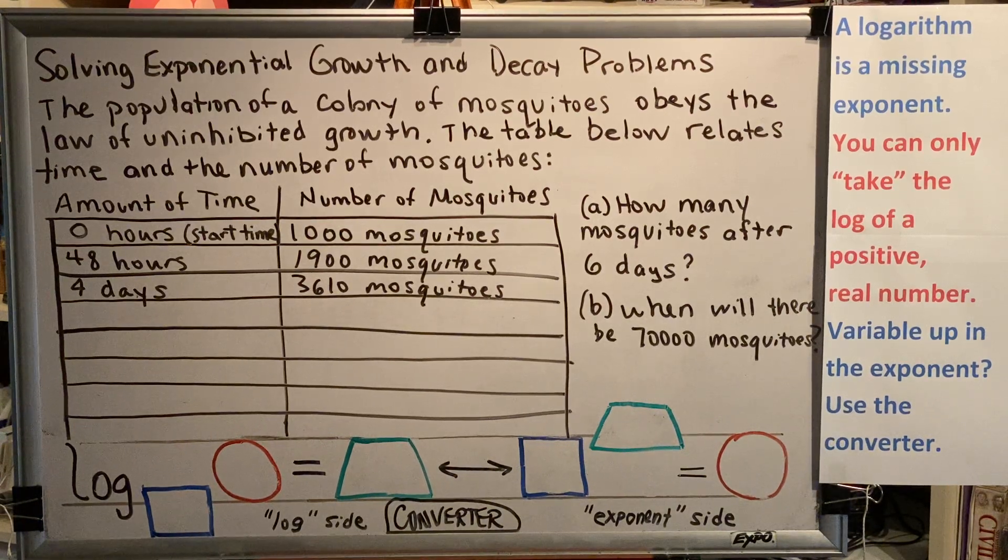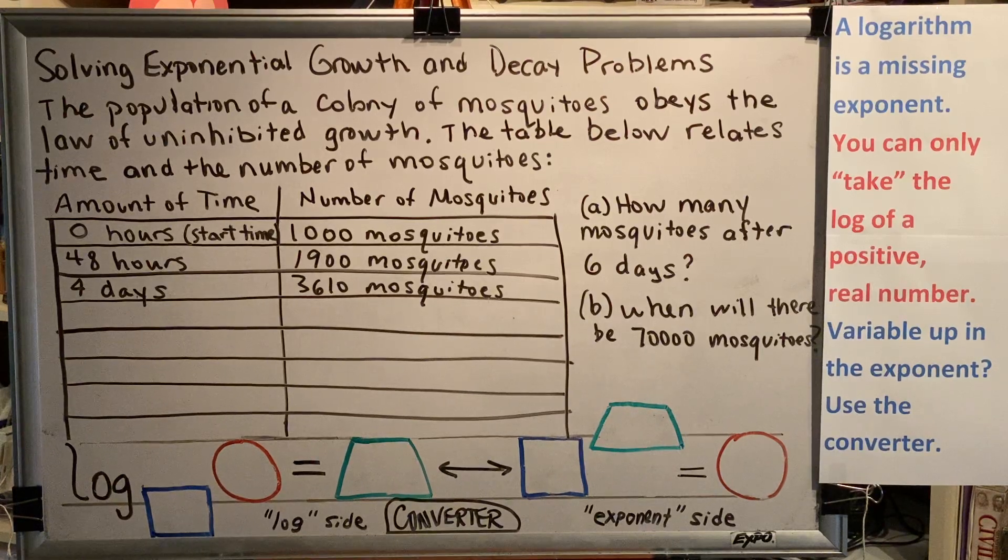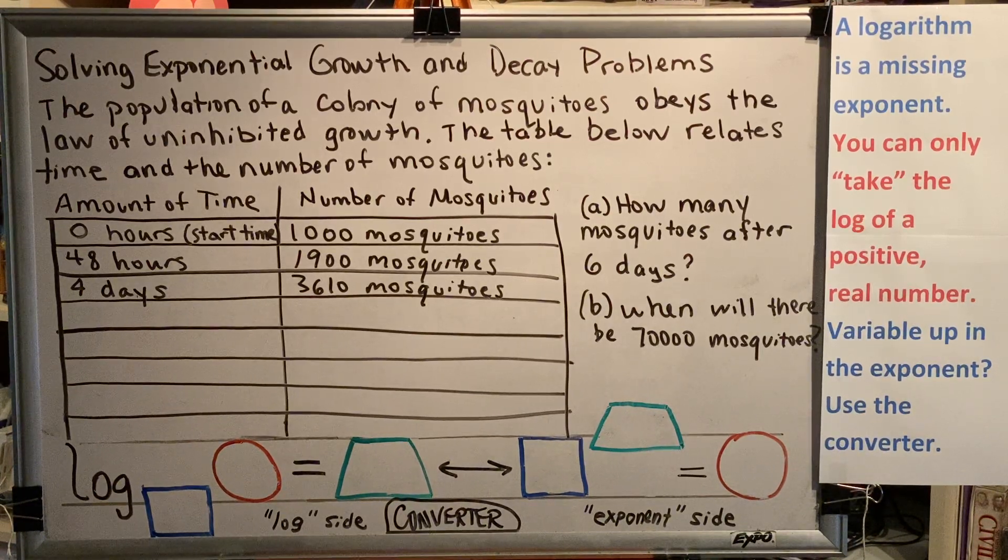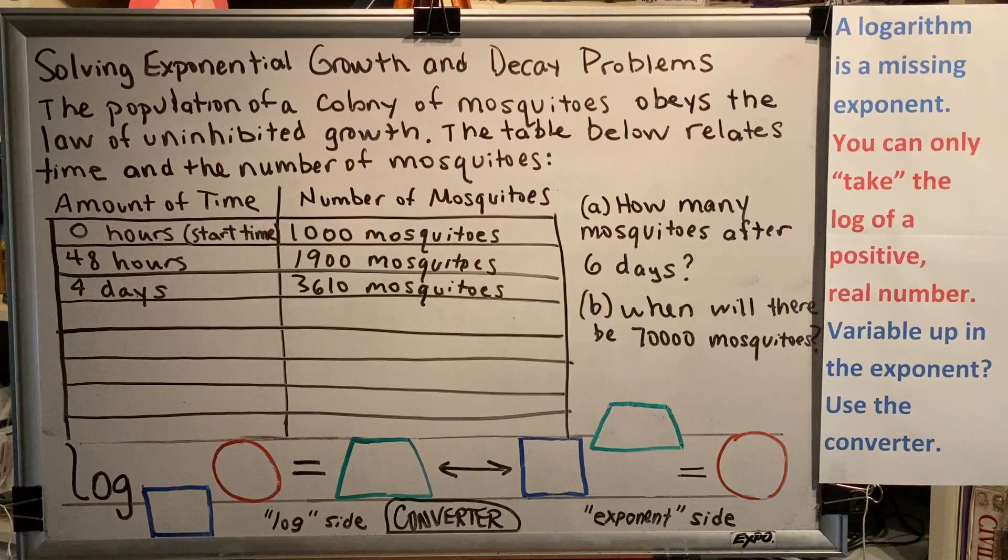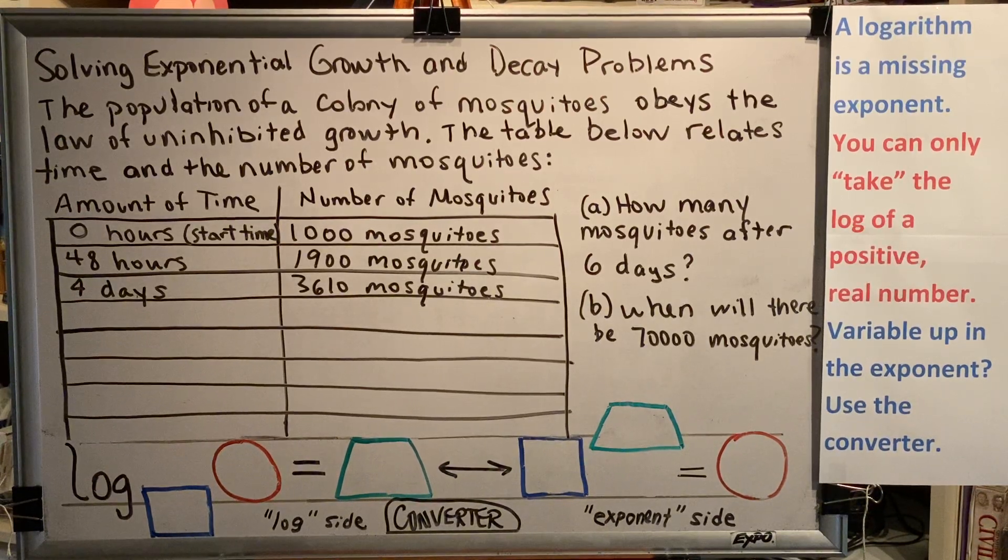The topic of this video is solving exponential growth and decay problems. In this video, we're going to use both methods in a single problem. The first method, the short way, is using patterns. The second method, the long way, is using the exponential growth equation.